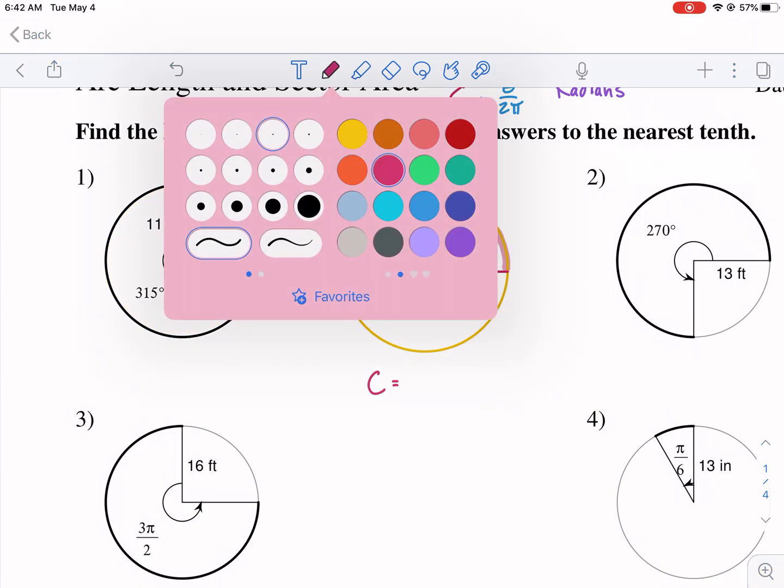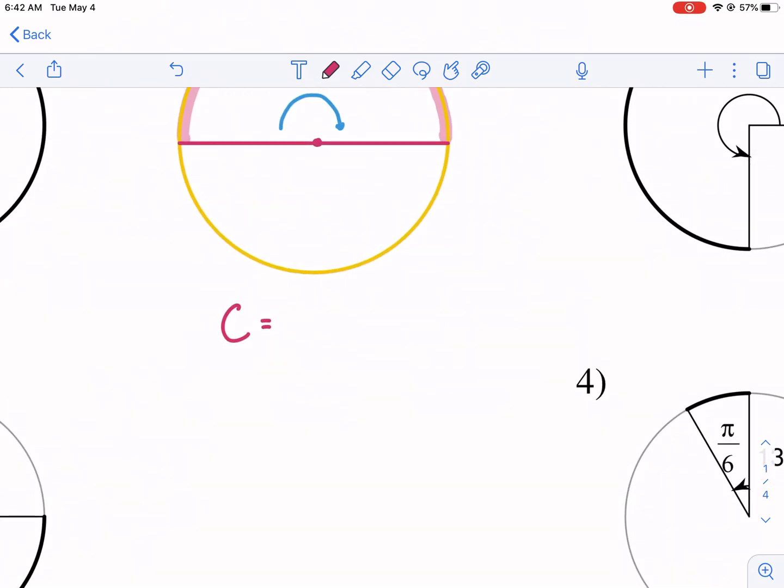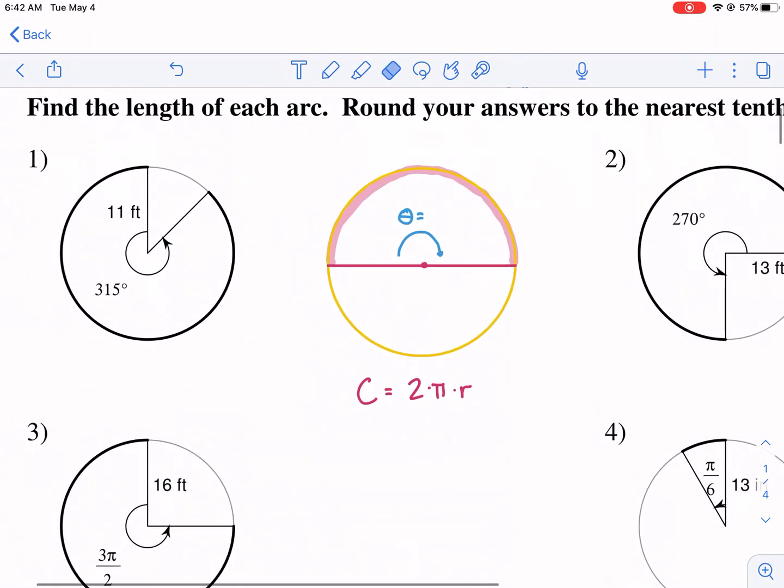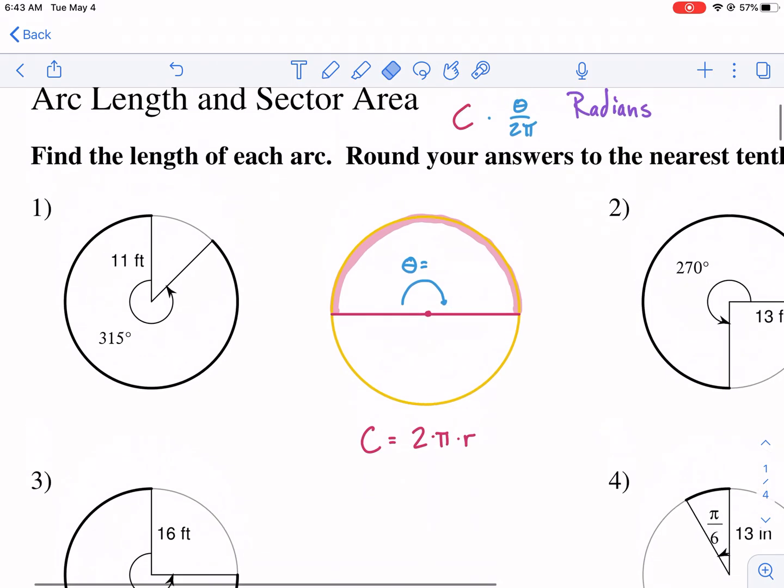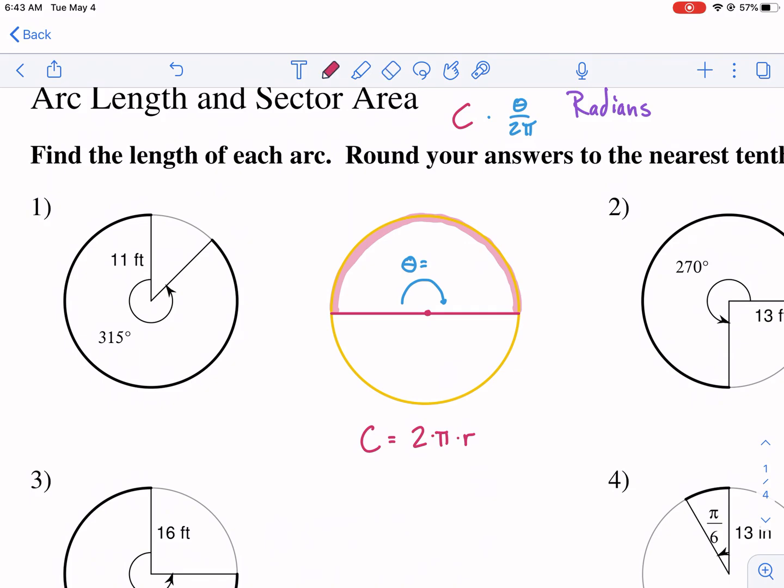Circumference is the total distance around a circle. The formula for that is two times pi times the radius. Some people write diameter times pi. I like using 2πr just because we always find the radius and the radius is like the key part of the circle to find. That's for the entire distance around a circle, 360 degrees around a circle. But arc length means not circumference, but only a portion of circumference.